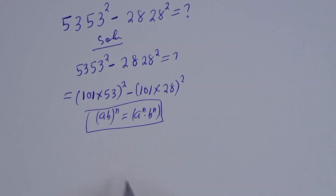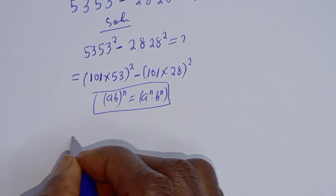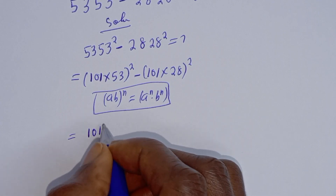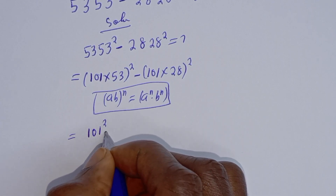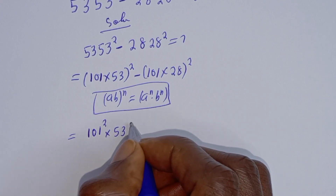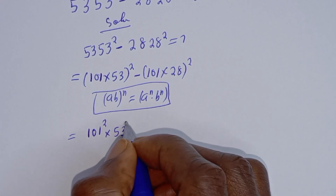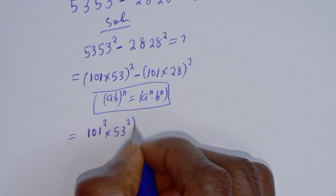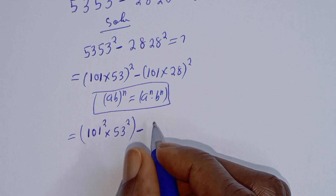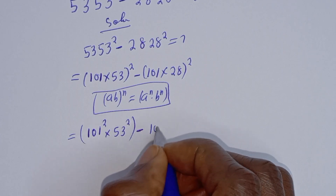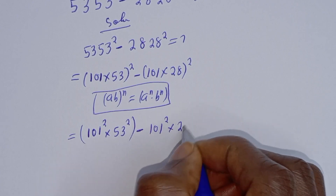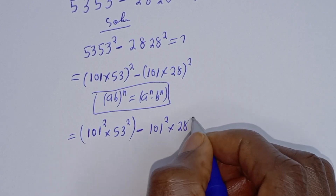Then this can be written as 101 squared multiplied by 50 squared, minus 101 squared multiplied by 28 squared.